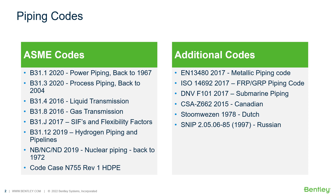We have the ASME B31 codes. B31-1 for power piping from 2020 all the way back to 1967. B31-3 for process piping from 2020 back to 2004. B31-4 for liquid transmission piping including offshore design considerations. And B31-8 for gas transmission and offshore piping including offshore design considerations.